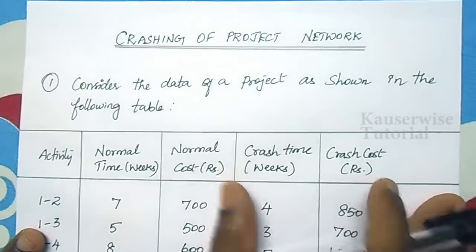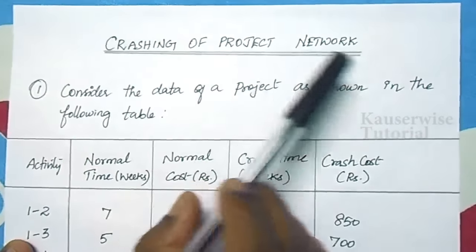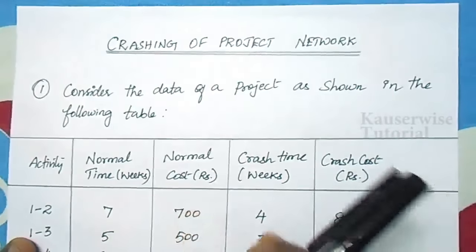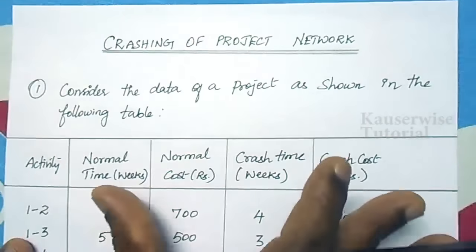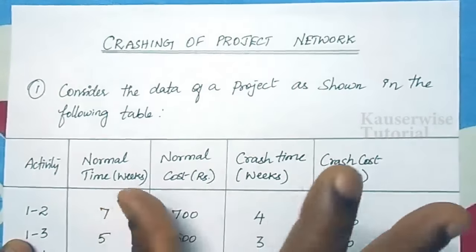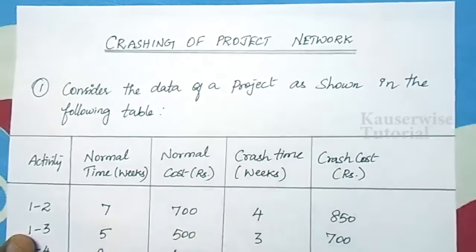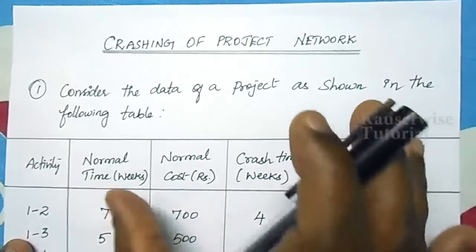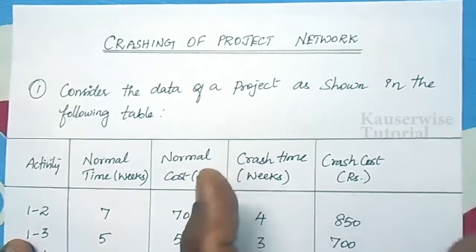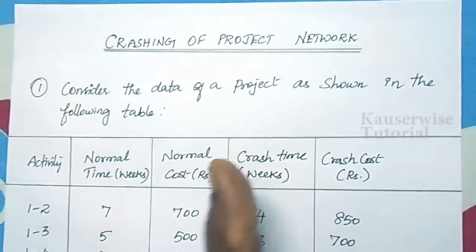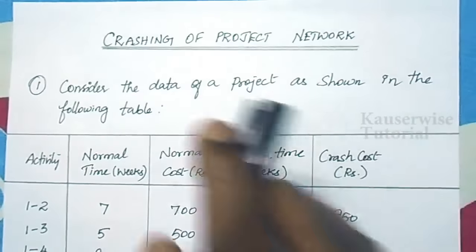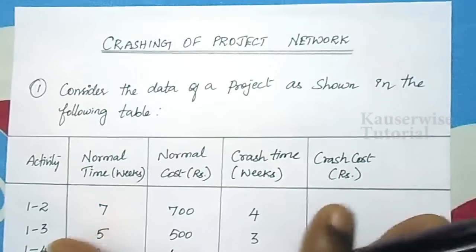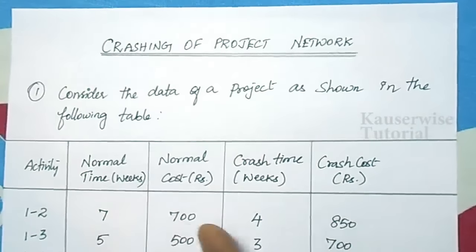In this video, we are going to see crashing of a project network. Generally, in any project network, the first step is to determine the critical path with normal activity timing. Then, when we execute the activity, we can speed up the activity timing in order to reduce the total completion time. This is called crashing of a project network.